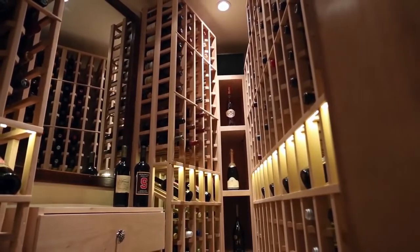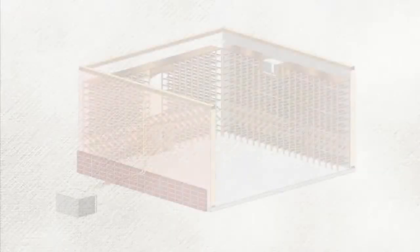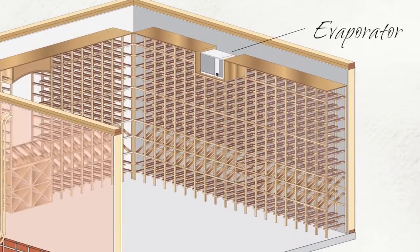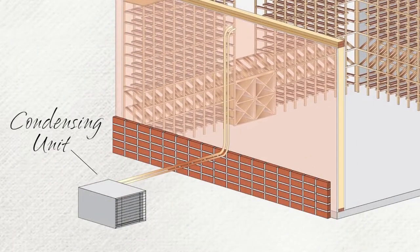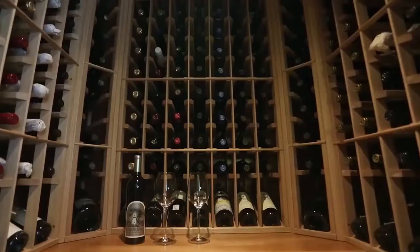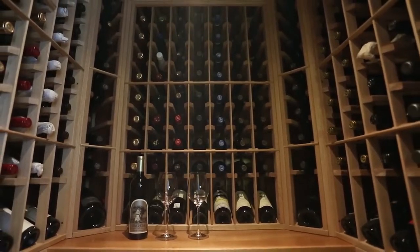This makes it suitable if space or noise is an issue. The evaporator can be installed in or near the cellar while the condensing unit will be located away from the cellar, keeping your cellar virtually quiet and vibration free.